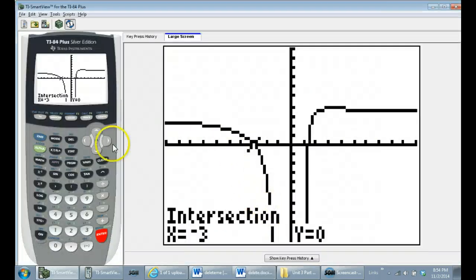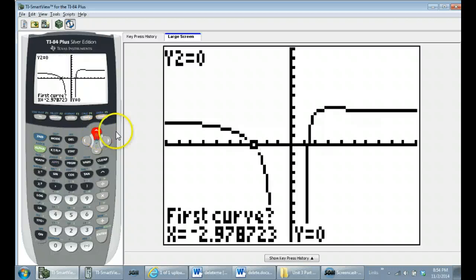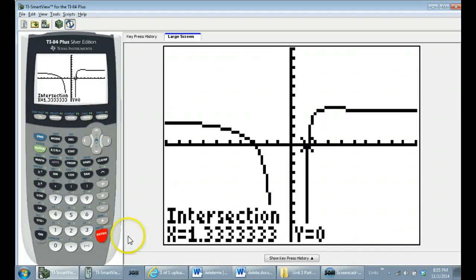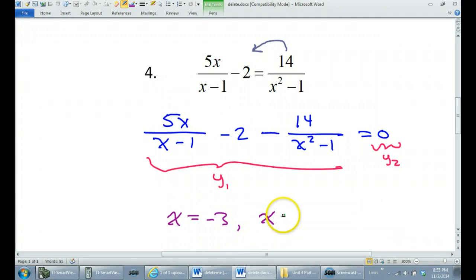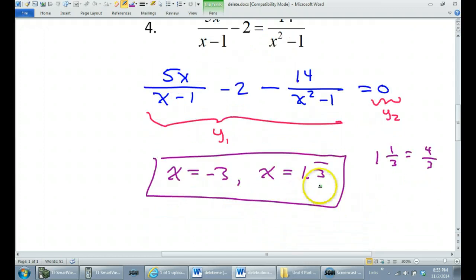Now I know there's another one. So again I will hit second trace 5 for intersection. I will again hit the up arrow key to jump to the horizontal line, and I will shimmy my way over. So it's very close to here. I'm going to hit enter 3 times. 1, 2, 3. And that is 1.3 repeating. Now I could probably turn that into a fraction if I really wanted to by the way. 1.3 repeating, 3 repeating is 1 third. So this is 1 and 1 third. 3 times 1 is 3, plus 1 is 4. So this is 4 thirds. But whatever. This is good enough. So that is the same thing as 4 thirds.